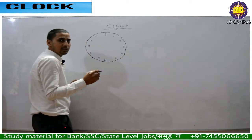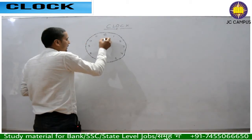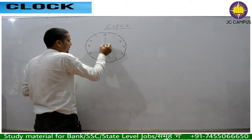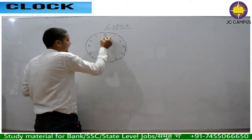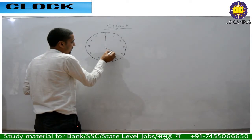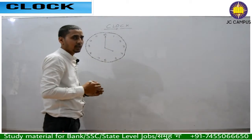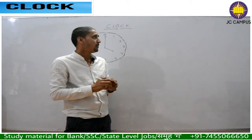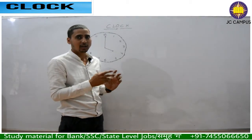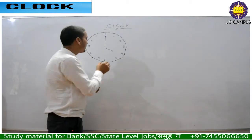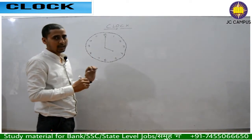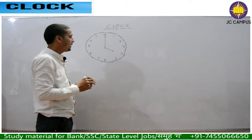The second hand is the longest, after that is the minute hand, and the hour hand is the smallest. In this, we will only talk about the minute hand and the hour hand. Clear?